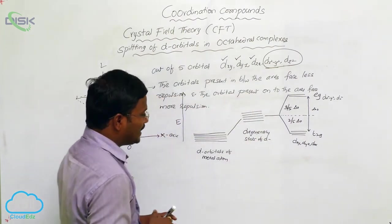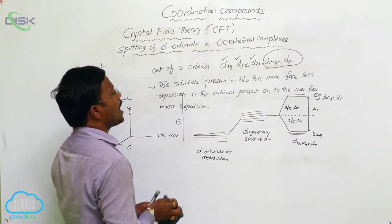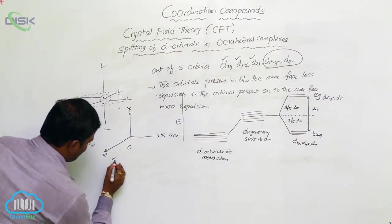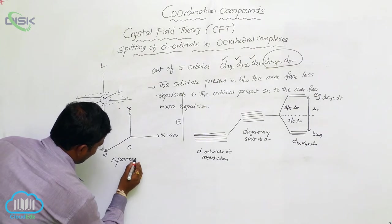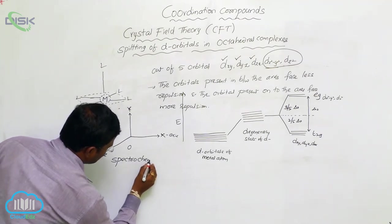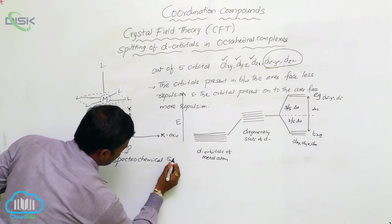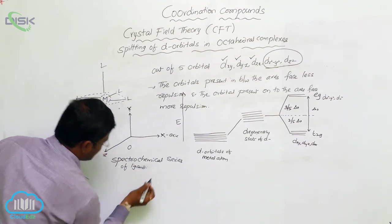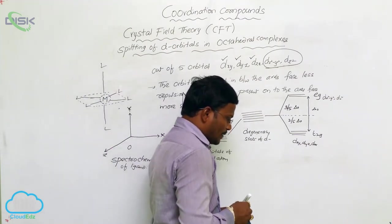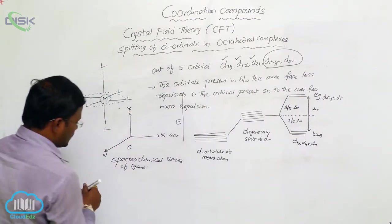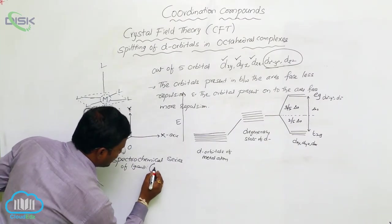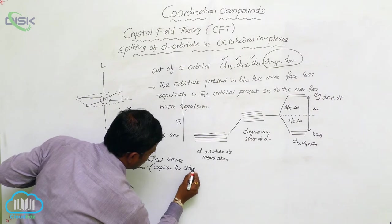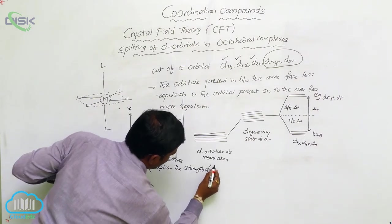This is about the splitting of d orbitals in octahedral complexes. Based on this, first we have to know the spectrochemical series of ligands. The spectrochemical series of ligands is useful to explain the strength of ligands.